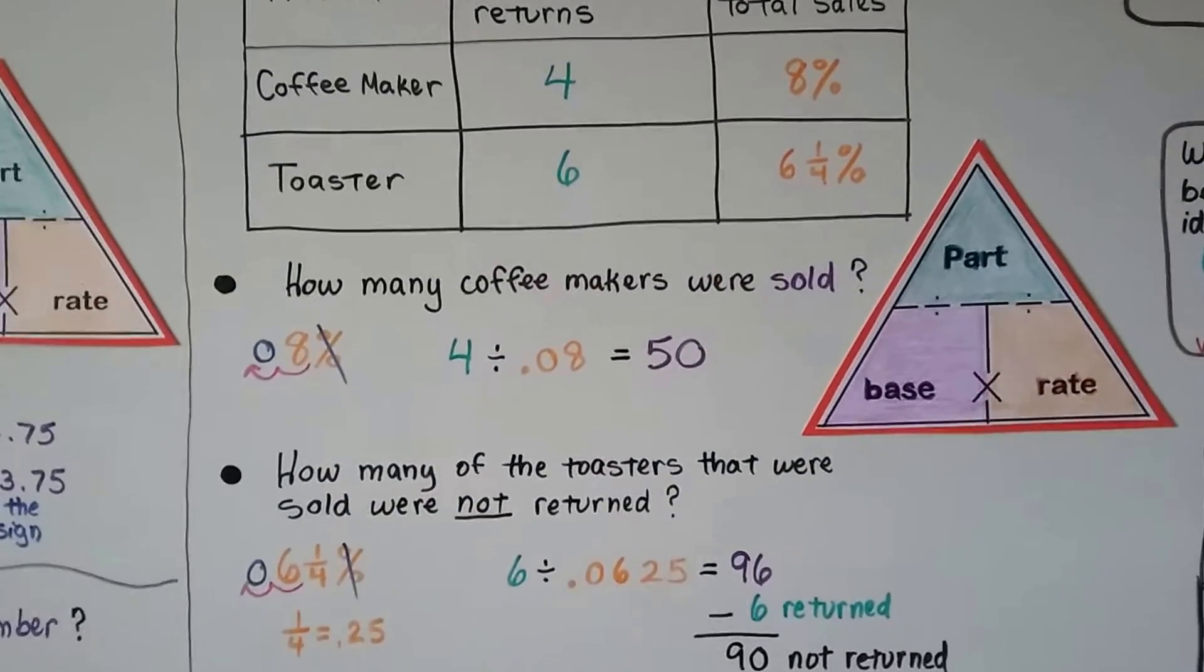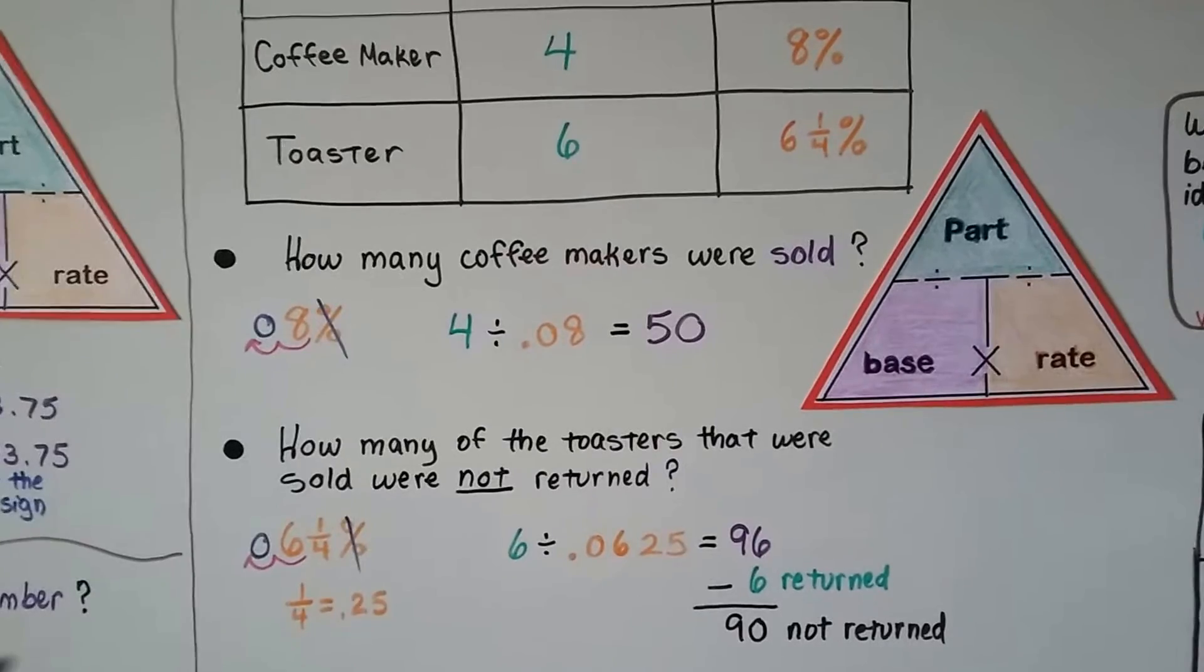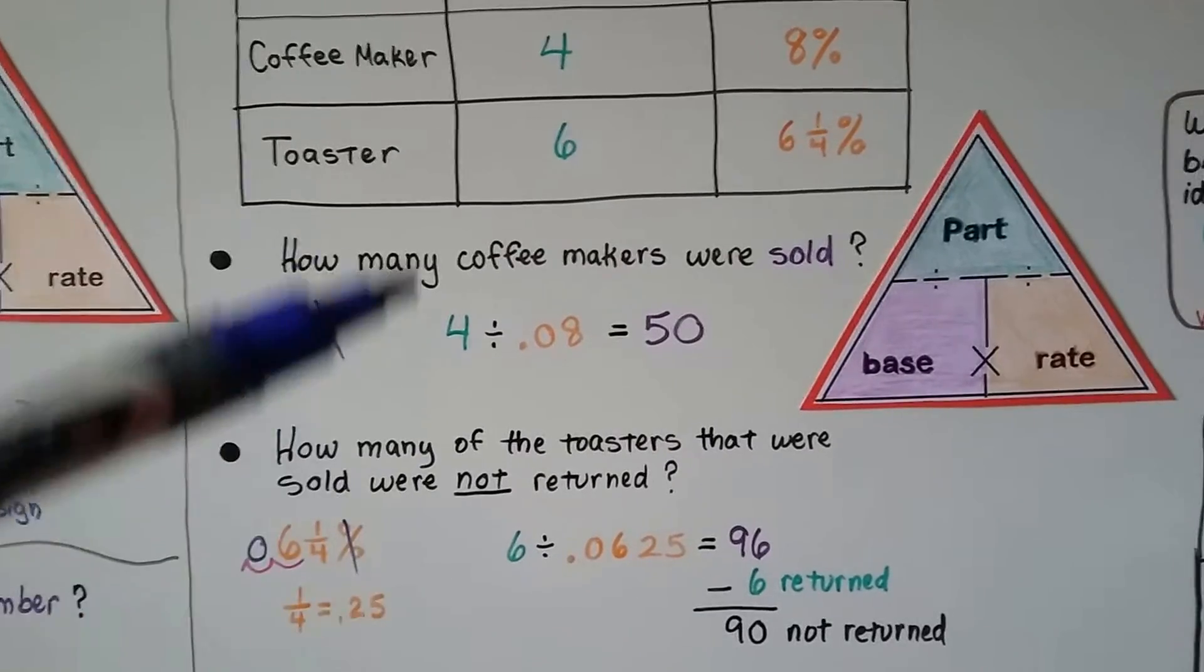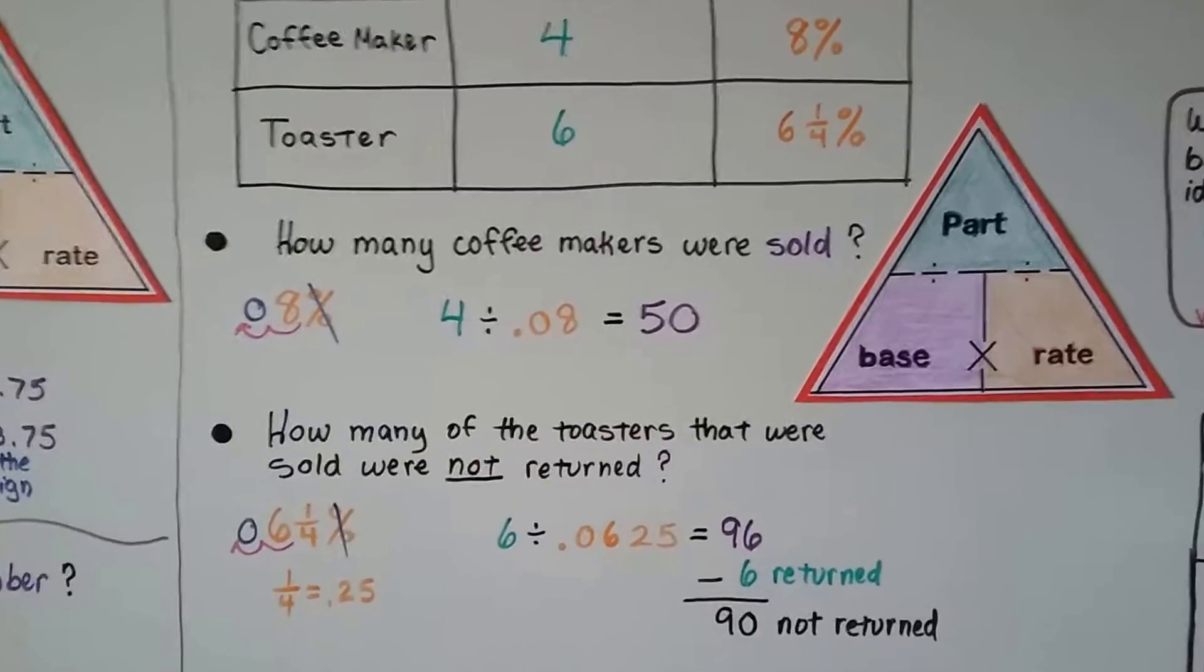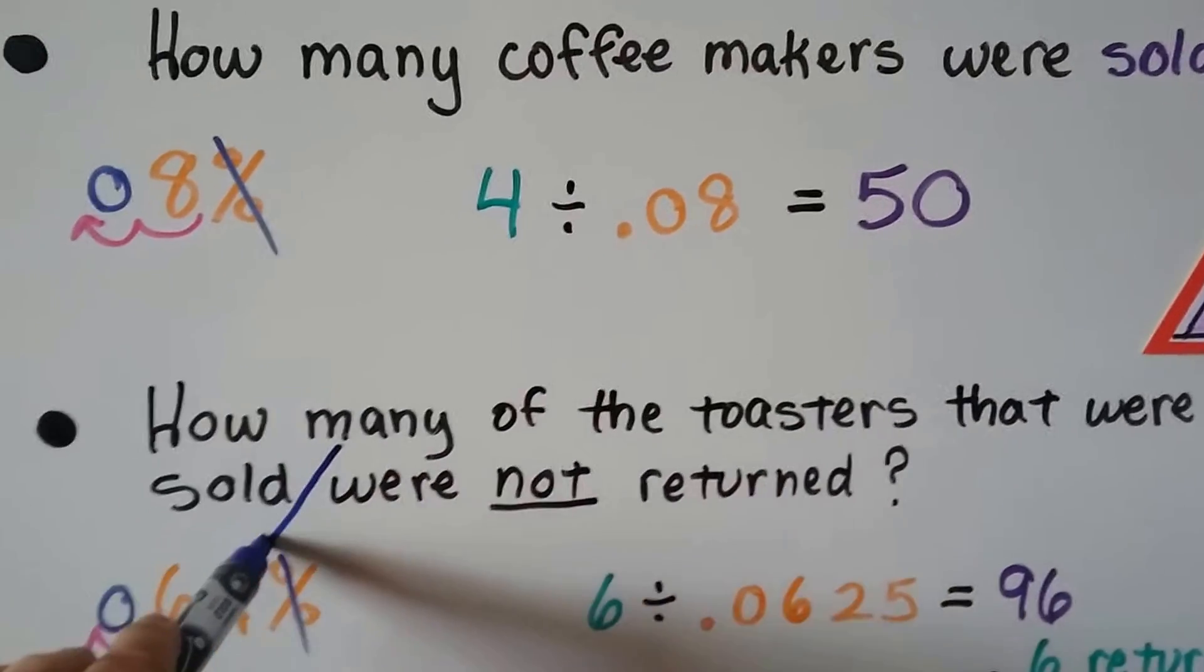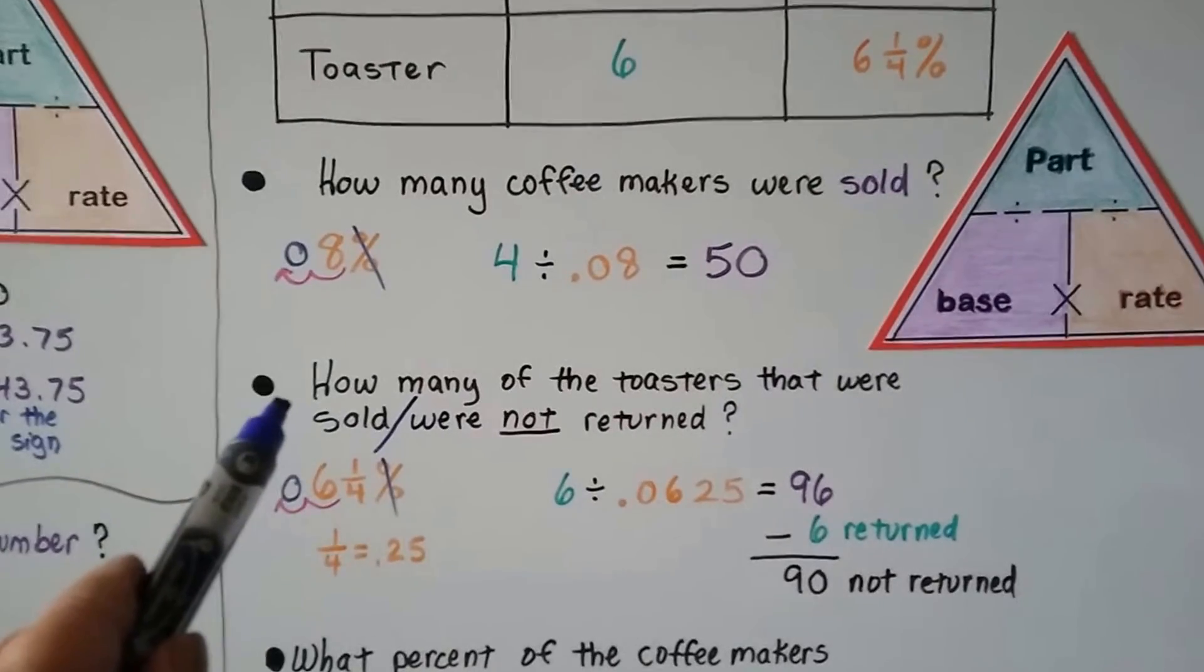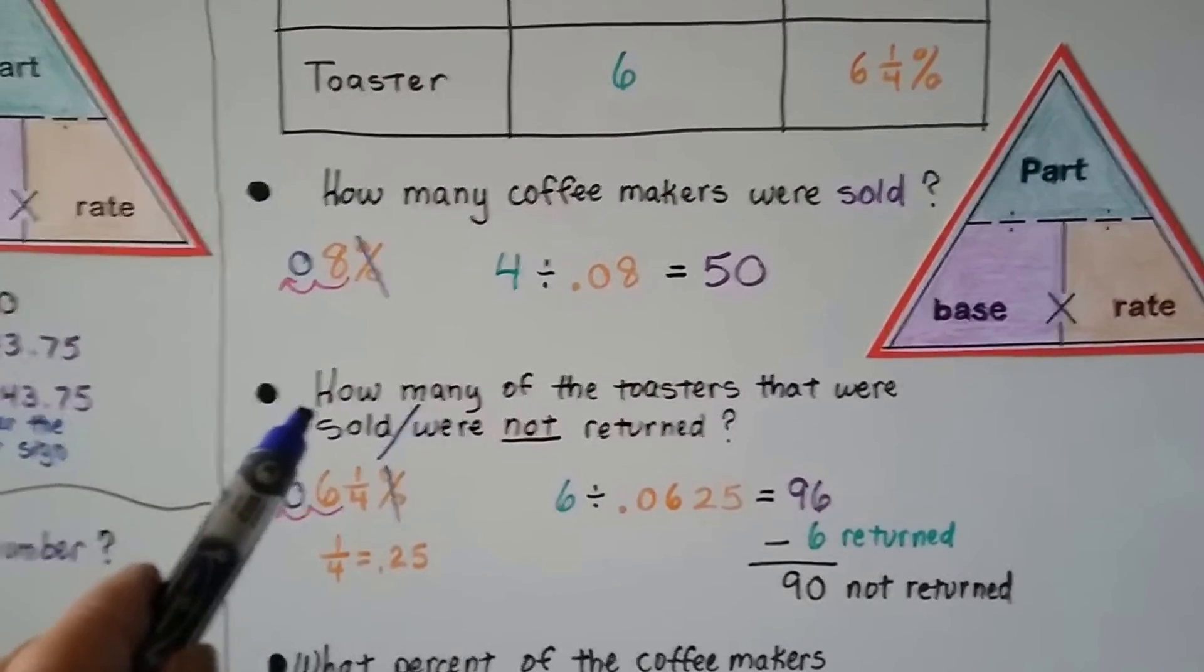How many of the toasters that were sold were not returned? This is basically asking the same thing as this, except it's got an extra part. So if we stop it right here and just look at this first part of the question, how many of the toasters were sold? Well, then let's do what we did for the coffee makers.